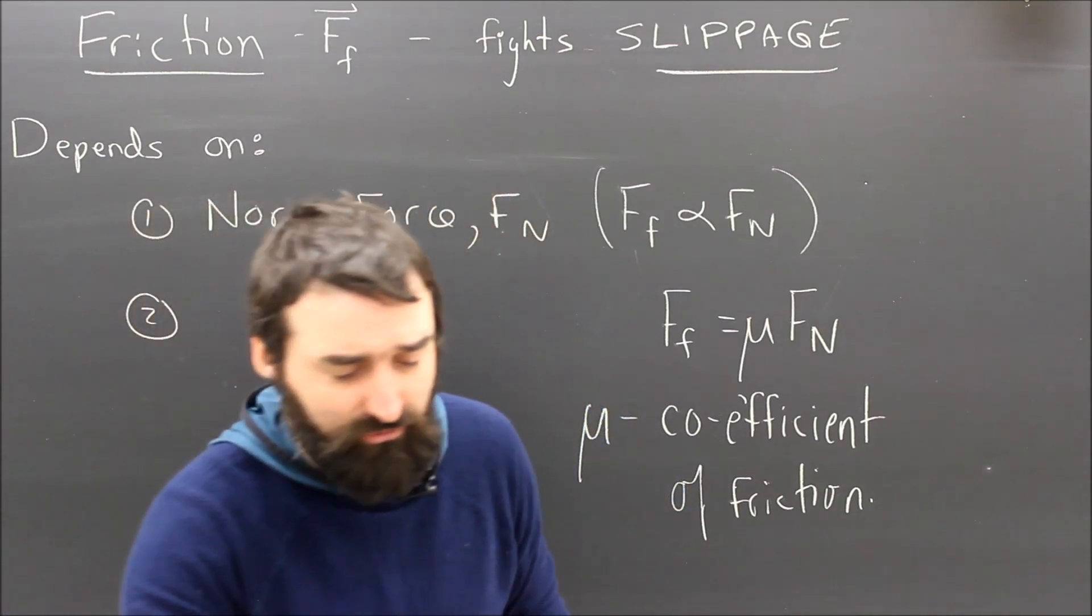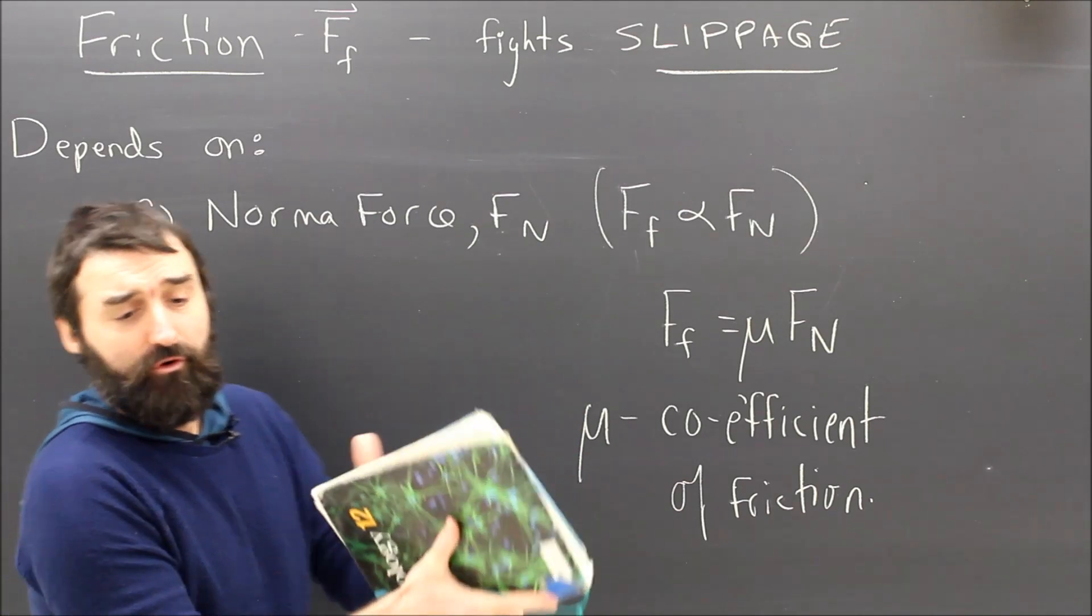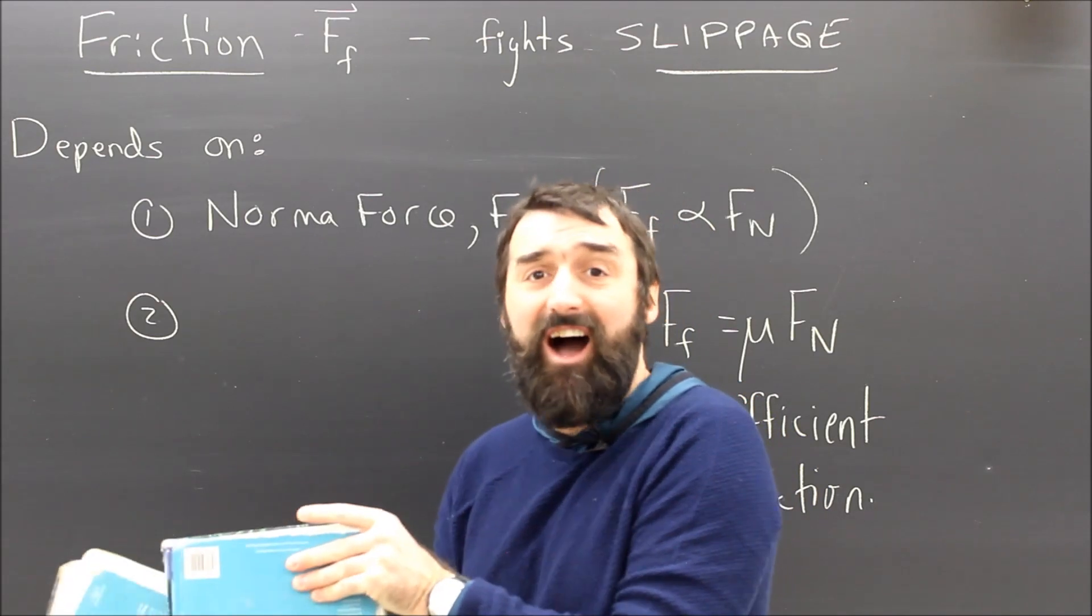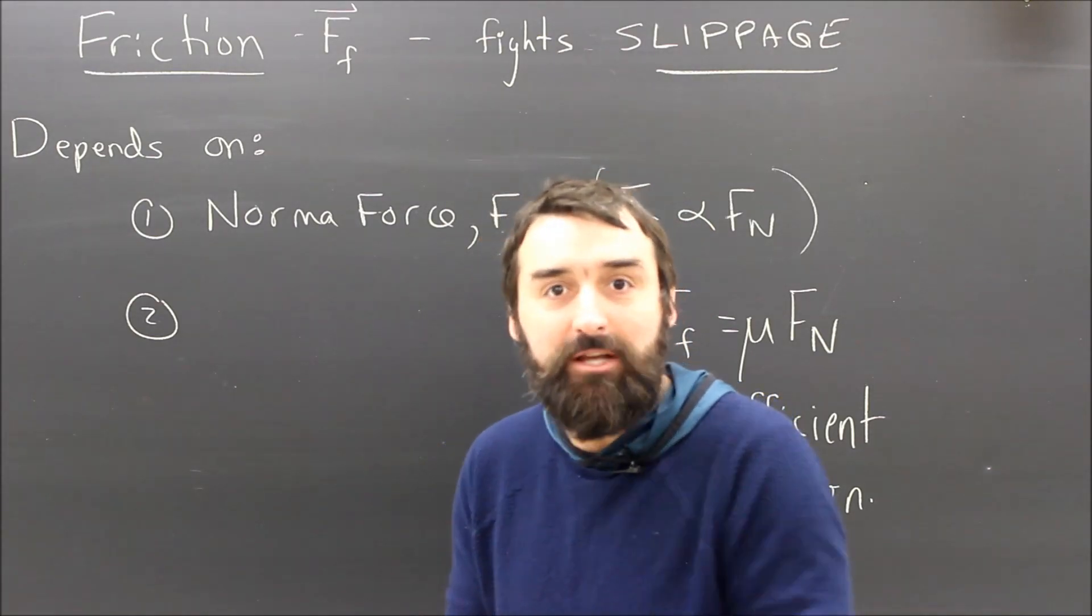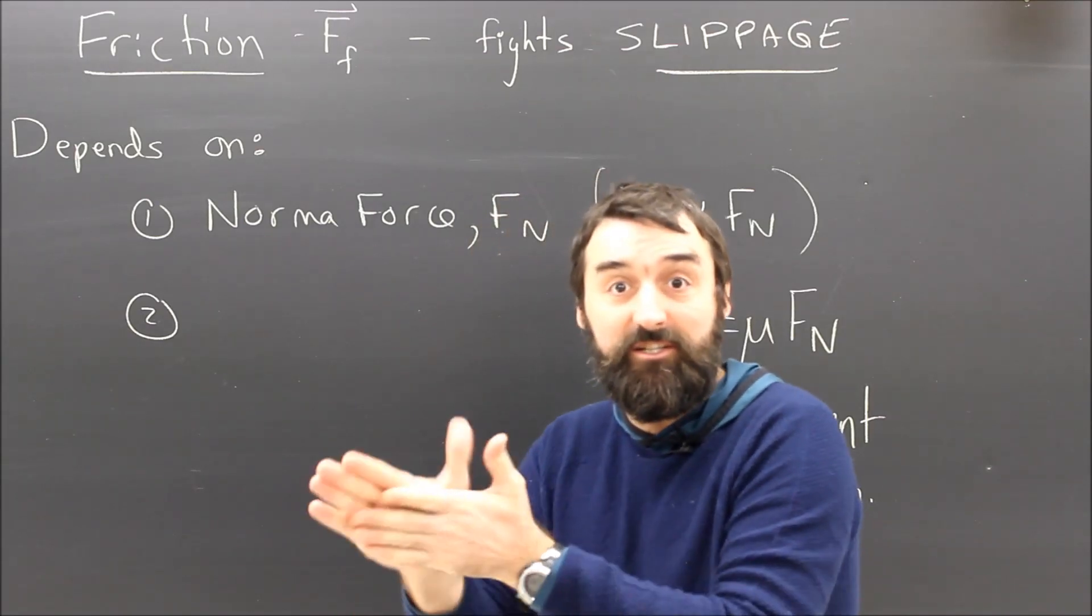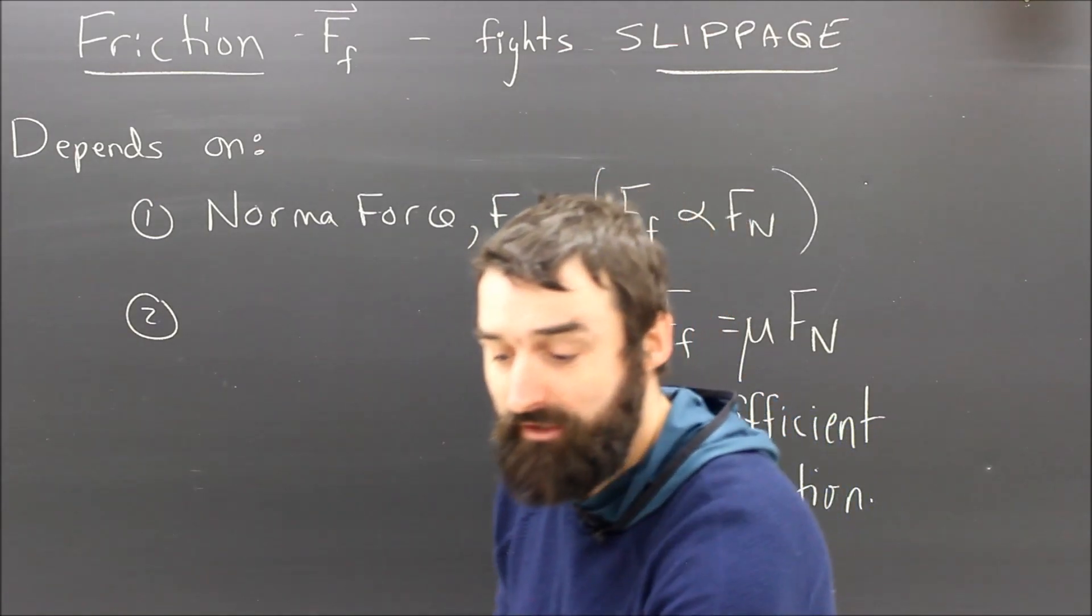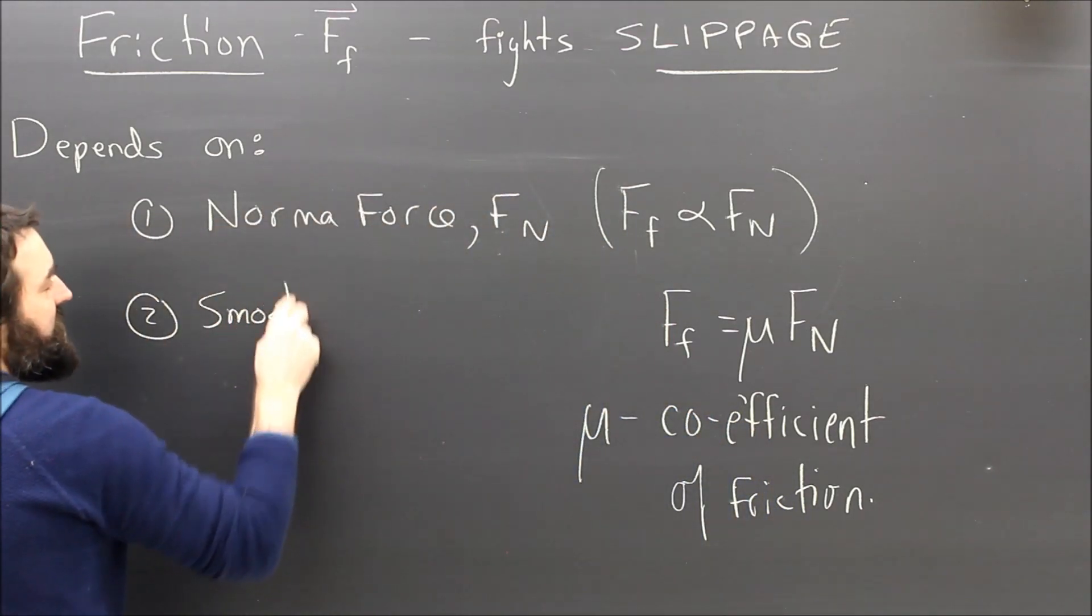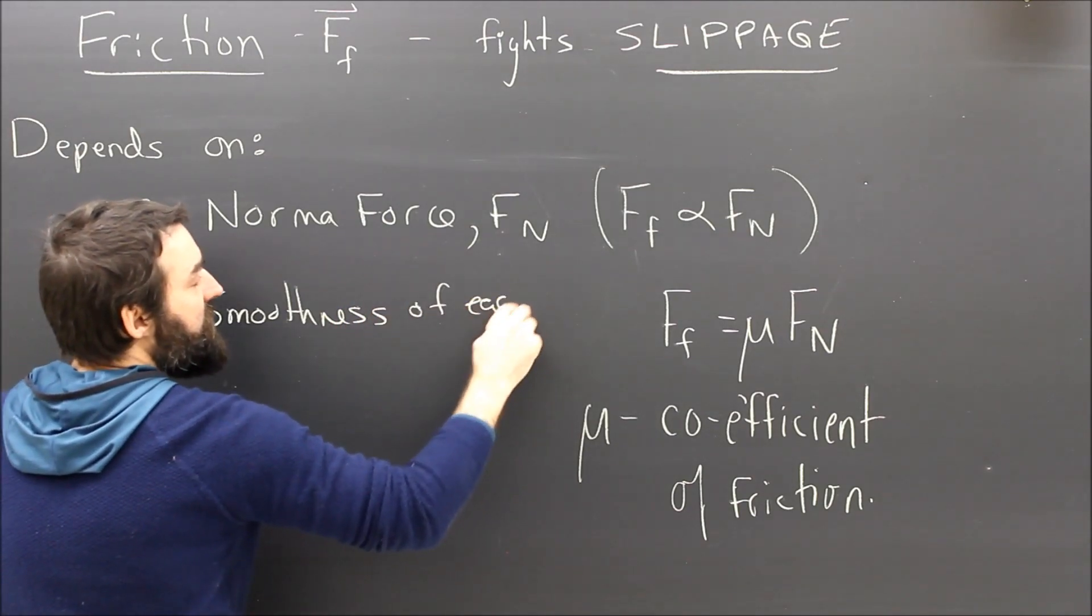It has to do with how smooth or how rough the two surfaces are. So, two rough surfaces are going to have a high coefficient of friction. It's going to be a lot of friction between two rough surfaces. But two smooth surfaces like steel on ice is going to have a pretty low coefficient of friction. So, that's the second thing that friction depends on. Basically, it's the smoothness of each surface.